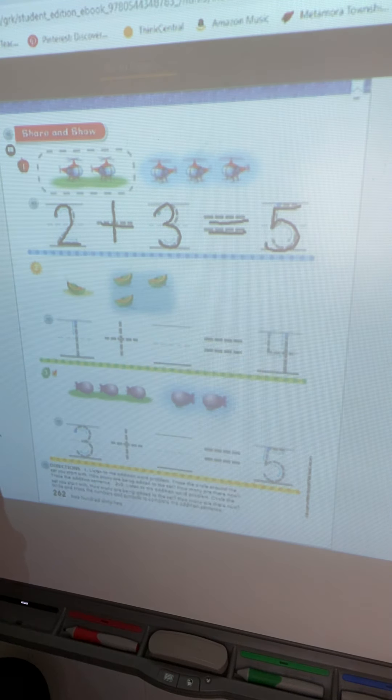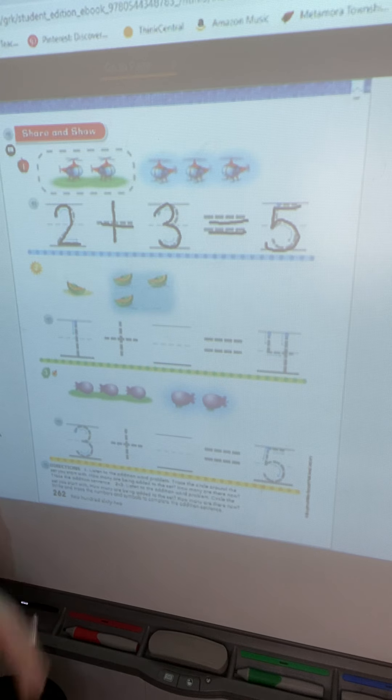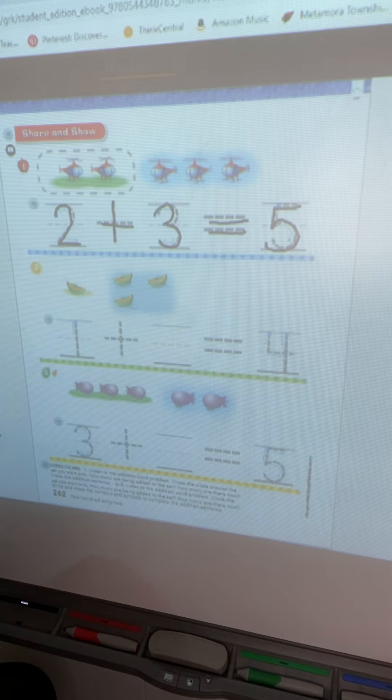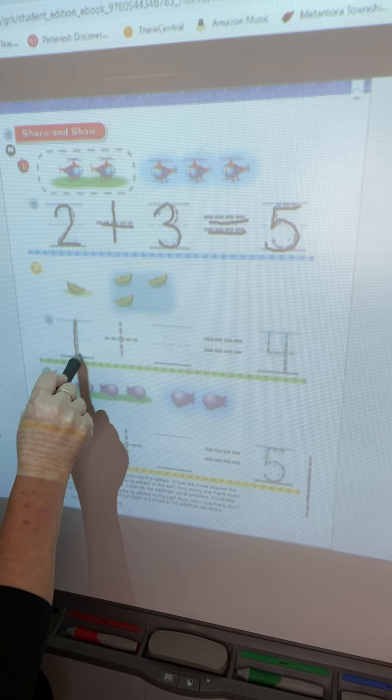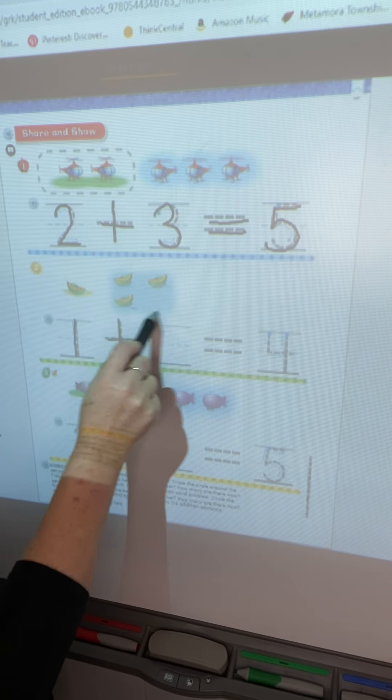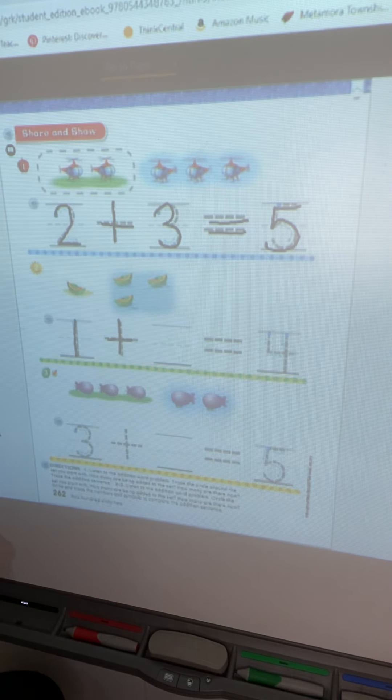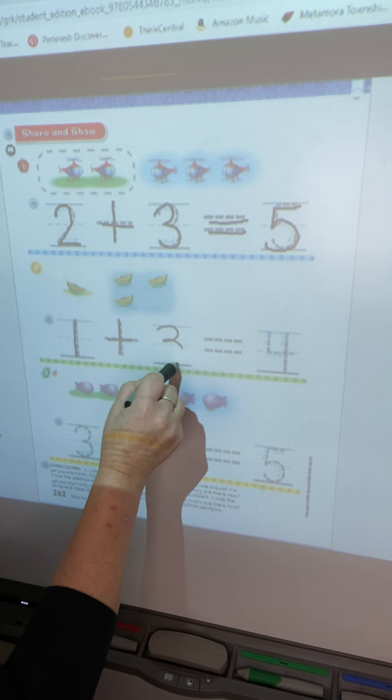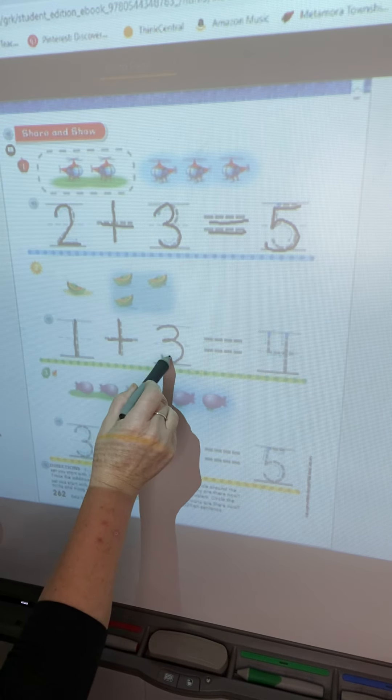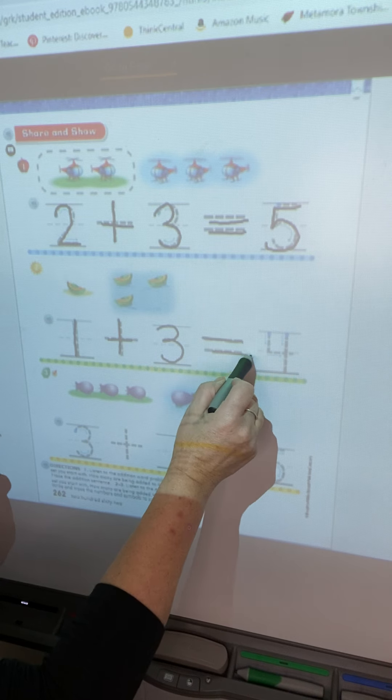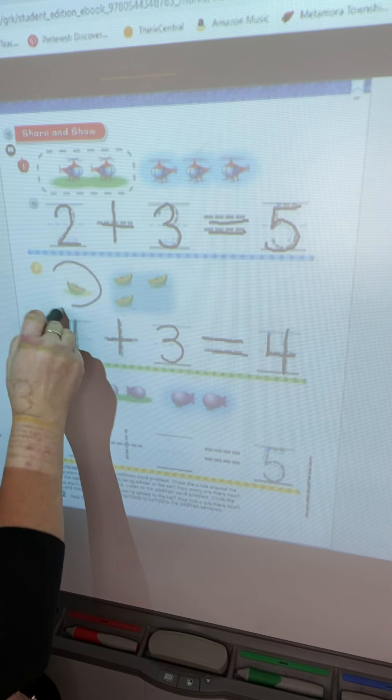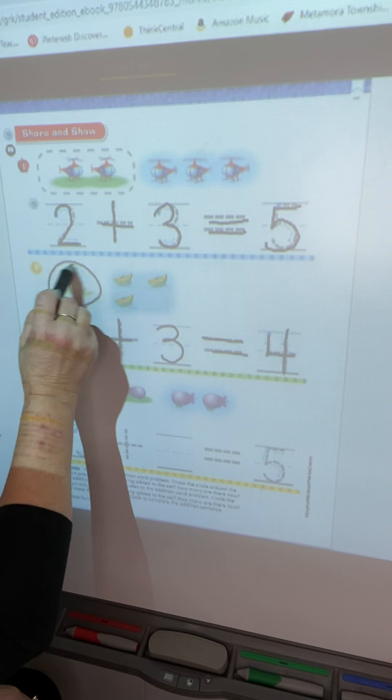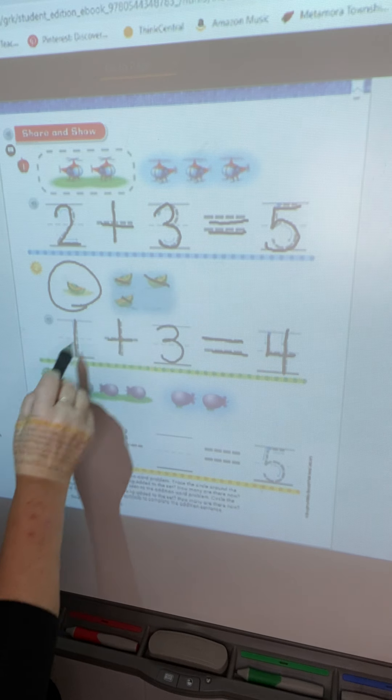So let's look at number one. We're going to work with helicopters. There are two helicopters on the ground, okay? So we're going to start with two. Go ahead and trace that two first. And our plus symbol, two plus, how many more are there? There are three more. So to count them, we could say, we know there are two. So we say two, and then let's count on two, three, four, five. So two plus three equals five.